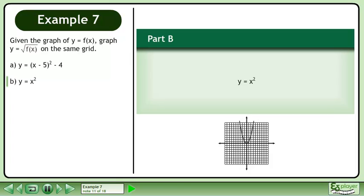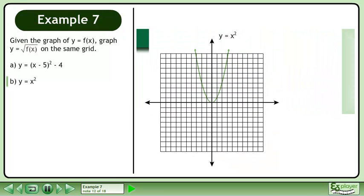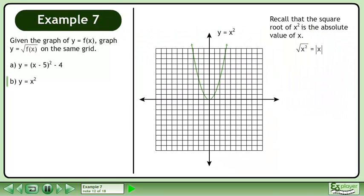In part b, we will find the square root graph of y equals x squared. Recall that the square root of x squared is the absolute value of x. Draw the graph of y equals the absolute value of x.